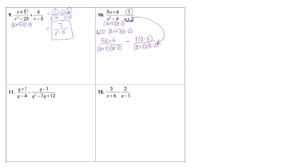We have 5a plus 6 over a plus 2 times a minus 2, then minus, and the other denominator is just a plus 2, but we want to build it to a plus 2 times a minus 2. What did I multiply to this denominator to get this one? The difference is an a minus 2. So come back up — the numerator is 1 — and multiply by a minus 2. Now I have equivalent fractions and I'm ready to solve. Please don't try to cancel out — all you've done is made a ginormous circle of nothing.